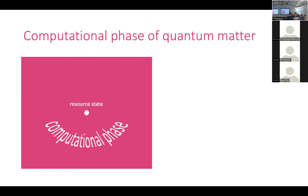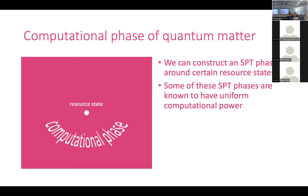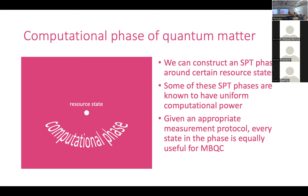At the highest level of complexity is the notion of a computational phase of quantum matter — an entire SPT phase constructed around a certain resource state that has uniform computational power. By using the right measurement protocol adjusted to where you are in the phase, every state in that phase has the same usefulness for MBQC. For instance, the cluster phase is built around the cluster state, and you can do universal MBQC on any state in that phase.